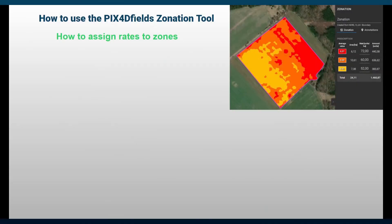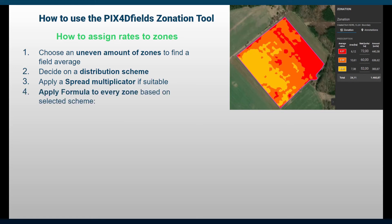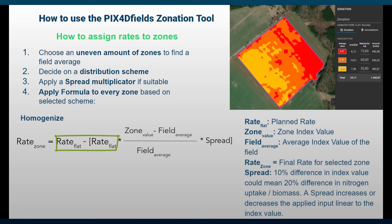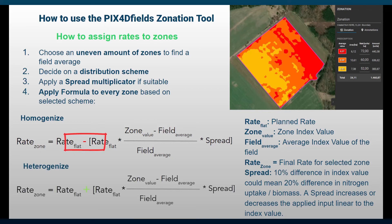For that, we need to choose the distribution scheme, decide if we want to increase the variability of the distribution with a spread multiplier, and finally apply the formula to calculate the rates. We need the pre-planned flat rate for the whole field, the index value of the zone we are calculating the rate for, the average index value of the field, and the spread value if needed. Based on the distribution scheme, you either subtract a correction value from the flat rate or add to it.